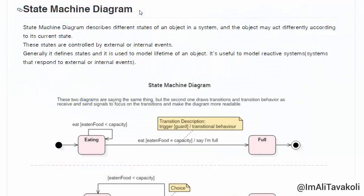State Machine Diagram describes different states of an object in a system, and the object may act differently according to its current state. These states are controlled by external or internal events, obviously. Generally, it defines states and it's used to model lifetime of an object. It's useful to model reactive systems, I mean systems that respond to external or internal events.